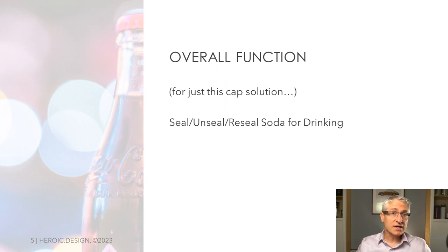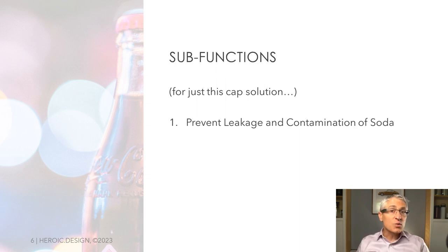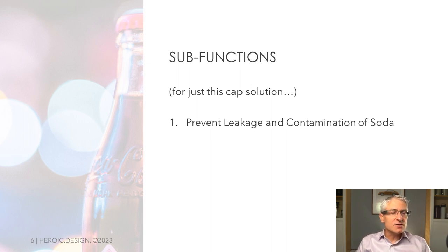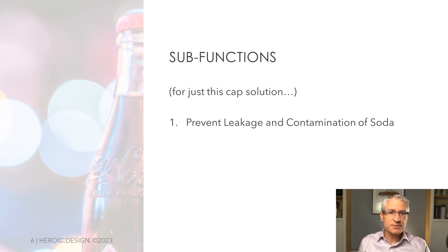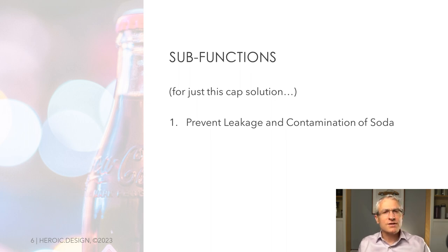Now we can break this down into sub-functions and see if we can keep all of our options open — not just for this particular solution, but for all the potential solutions. Let's start with one of the more obvious sub-functions: prevent leakage and contamination of soda. Regardless of the solution, this is one of the jobs it has to do. Before the soda gets to the person who's going to drink it, it has a long journey, and then it could be in the person's bag and can't leak there. I put in contamination because we also want to prevent things from the outside world getting into the soda. When we get to requirements, we can talk about how much leakage and contamination is acceptable — those numbers might be zero, but for now we don't worry about them.